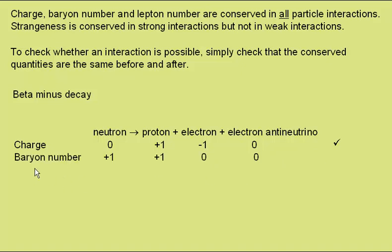Next, baryon number. A neutron is a baryon with a baryon number of plus one, as is the proton. The electron and electron antineutrino are leptons and so have zero baryon number. We have plus one on the left, plus one on the right, so in terms of baryon number conservation this interaction is possible.